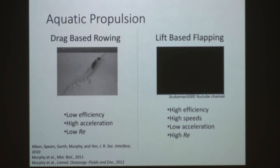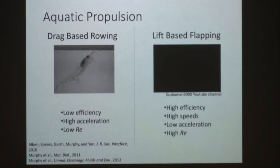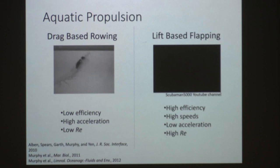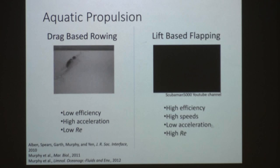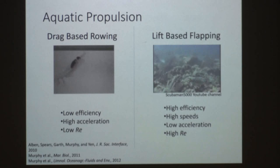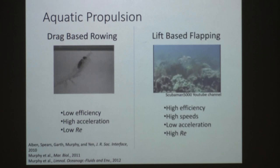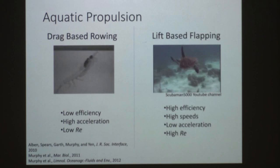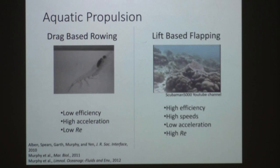What I want to talk about today is aquatic propulsion and the dichotomy between drag-based rowing — where animals use their appendages as paddles to push through the water, exemplified by Antarctic krill with five pairs of pleopods — and lift-based flapping, like what a turtle does with its flippers. Lift-based flapping is much more efficient, more common at high speeds and higher Reynolds numbers, and typical of larger animals.